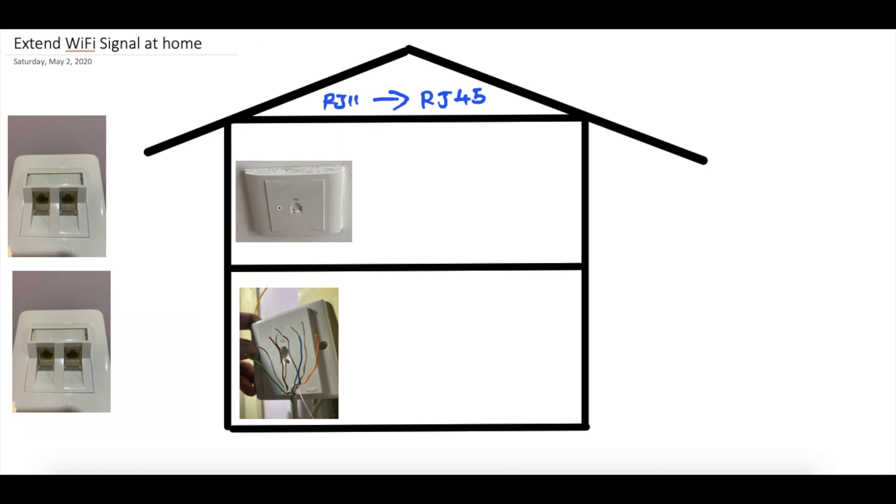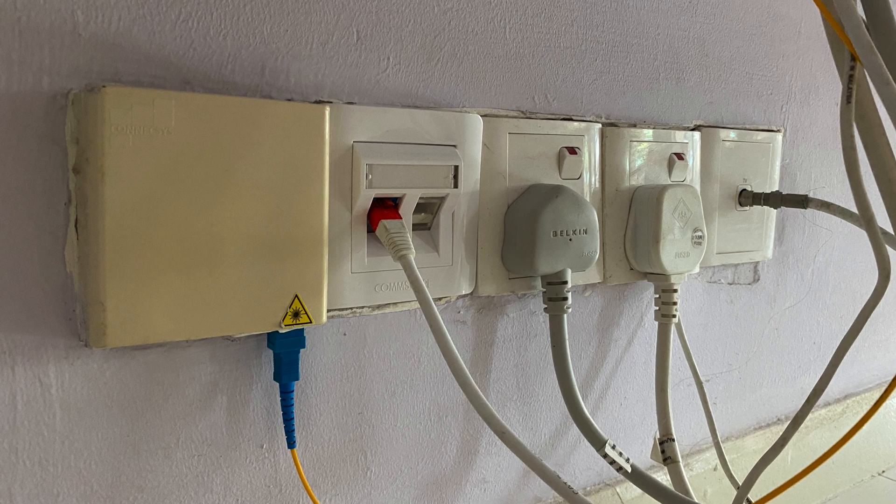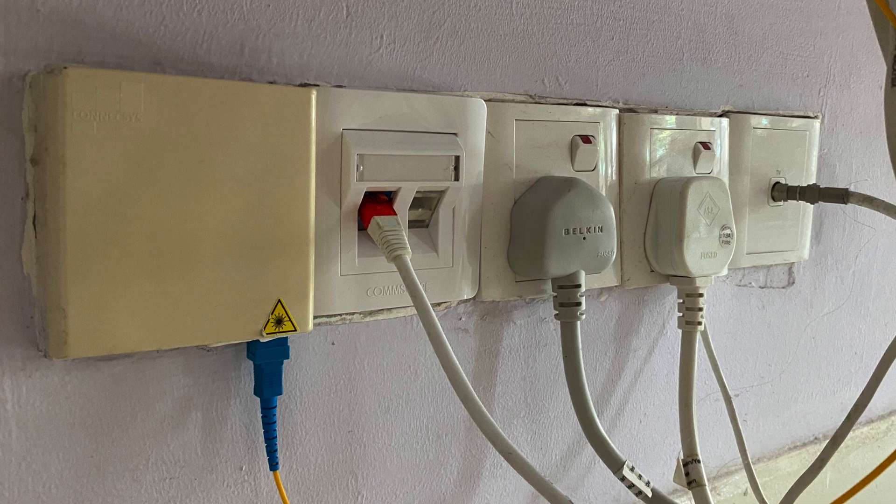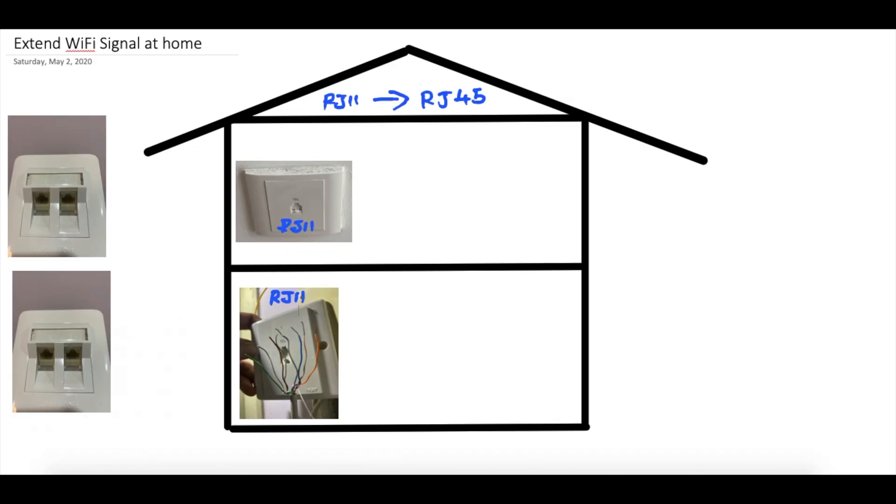First criteria: I have this port called RJ11. There's one upstairs and another one downstairs, normally placed somewhere around the fiber optic port or antenna area. Second criteria is I'm not using this for telephone purpose, then continue watching this video on how I did it.